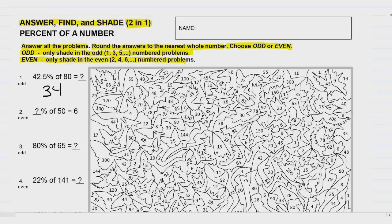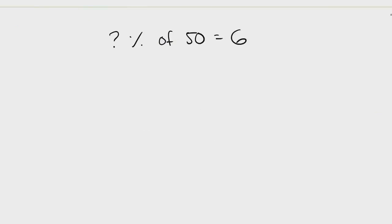Problem number two. Problem number two is a little different — you're missing the percent. So we have: what percent of 50 equals six? When we did problem number one, we were working this way. But this time we're working the opposite direction. When we worked left to right, we multiplied. But now we're going backwards in the opposite direction, so we do the opposite operation, which means we're going to divide on this problem.